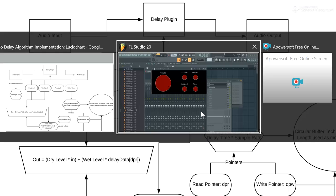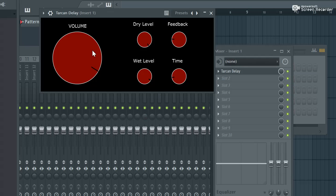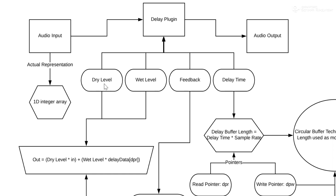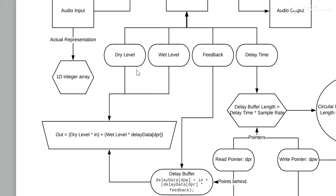So in our plugin, we have four parameters: volume, which is just the main volume, dry level, wet level, feedback, and time. Dry level and wet level contribute to the main output equation: output equals dry level times the input signal, plus wet level times the delayed signal. So dry level controls the unaffected signal level, and wet level sets the level of the effect.